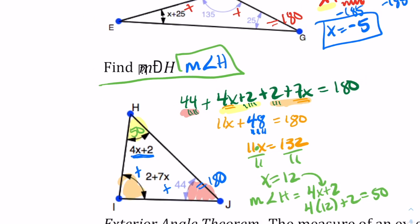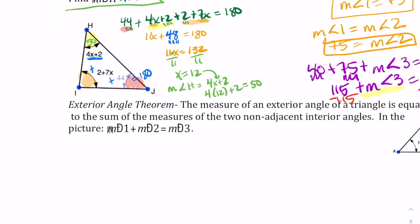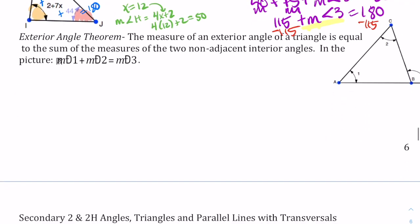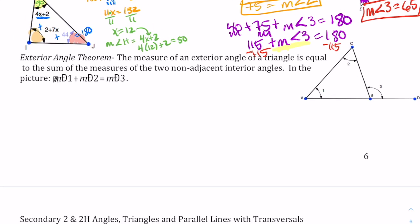We also have the exterior angle theorem. The measure of an exterior angle of a triangle is equal to the sum of the measures of the two non-adjacent interior angles. Adjacent means next to, so looking at angle three, the angle adjacent to it is next to it. We want the two angles that are not adjacent — those are angle one and angle two, the non-adjacent or remote interior angles. So the measurement of angle one plus the measurement of angle two equals the measurement of angle three.